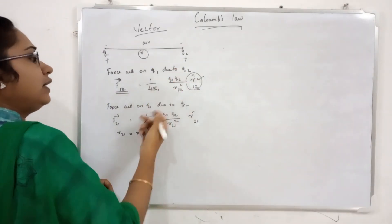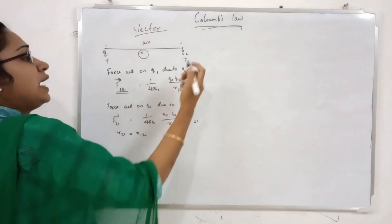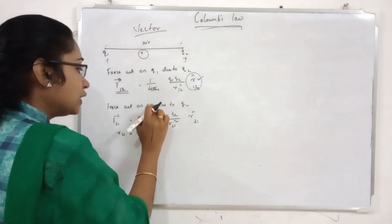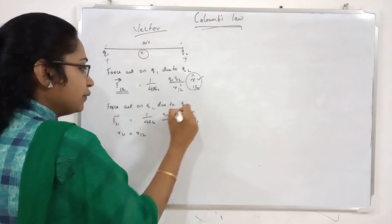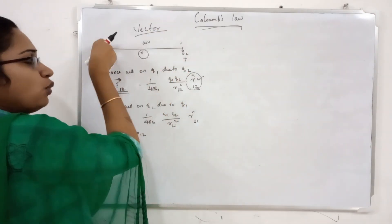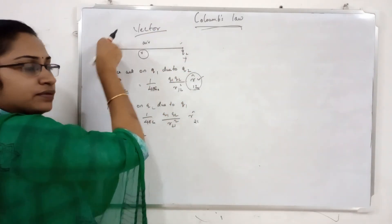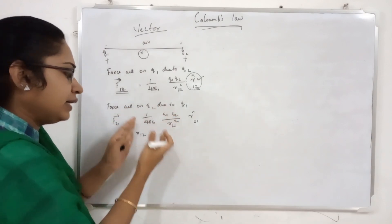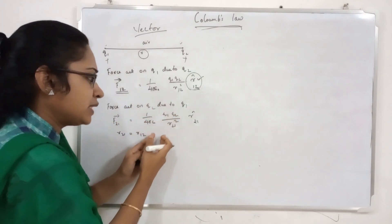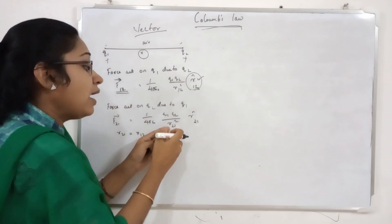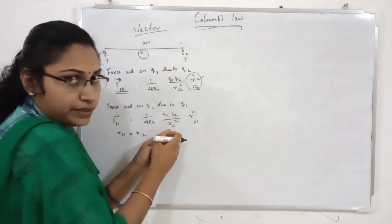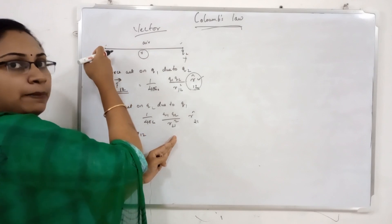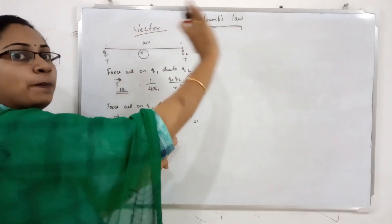Force acting on Q1 due to Q2. Now force acting on Q2 due to Q1 — that is equal to 1 by 4 pi epsilon, Q1 Q2 divided by r21 squared. That is the force from Q2 to Q1. It is an opposite force.